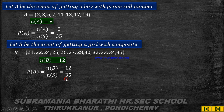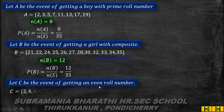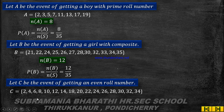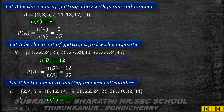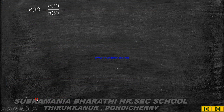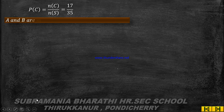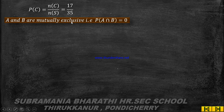Let C be the event of getting an even roll number. Even numbers from 1 to 35 are: 2, 4, 6, ..., 34. So n(C) equals 17. P(C) equals n(C) by n(S), which is 17 by 35. Next, we consider intersections. A and B are mutually exclusive since A involves boys and B involves girls.